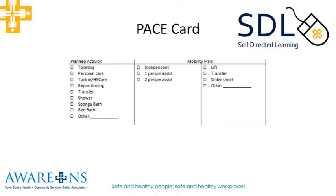The next section of the PACE card has a little more detail. This is the activity that's planned — what you were there to do. There's a whole list of activities, whether it's toileting specifically, personal care delivery, tuck-in (the term used in home care), or HS care which is nighttime care in long-term care. Whether you're repositioning, transferring, showering, sponge bath, bed bath, or other activities. You simply check one of those boxes indicating what you're planning on doing.